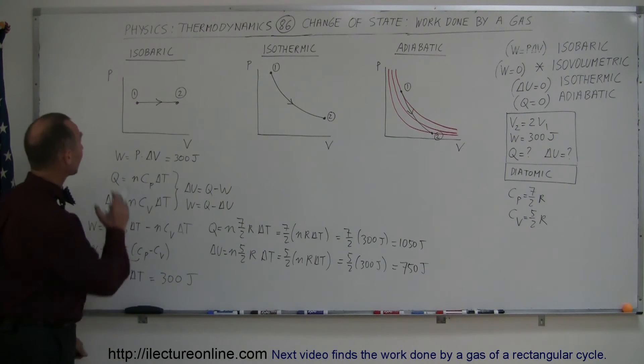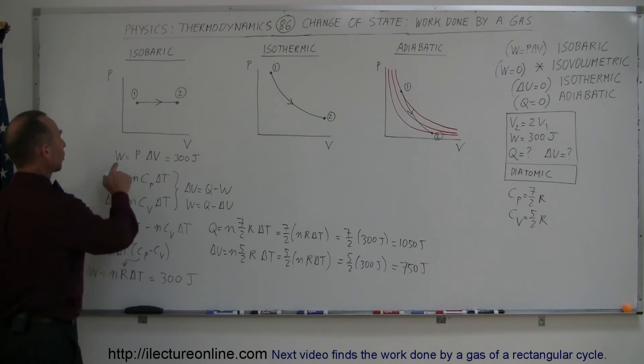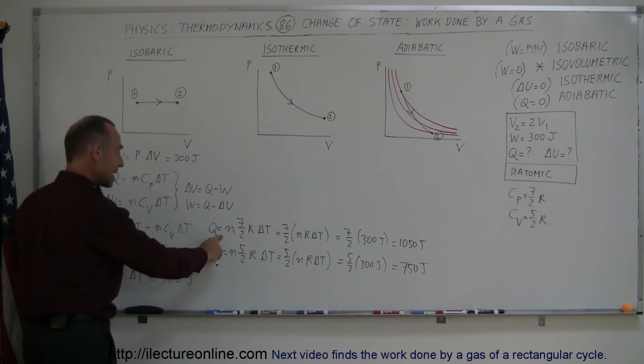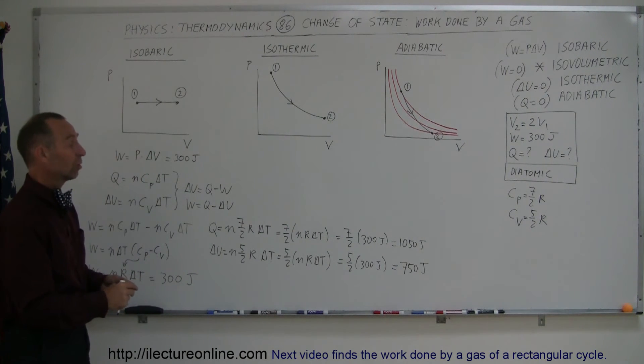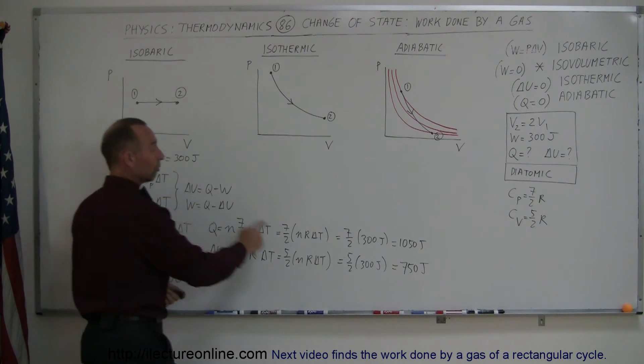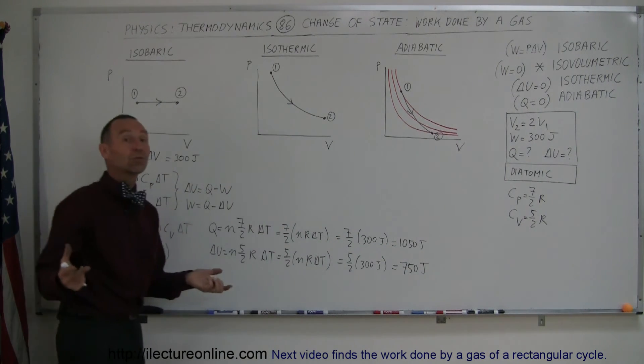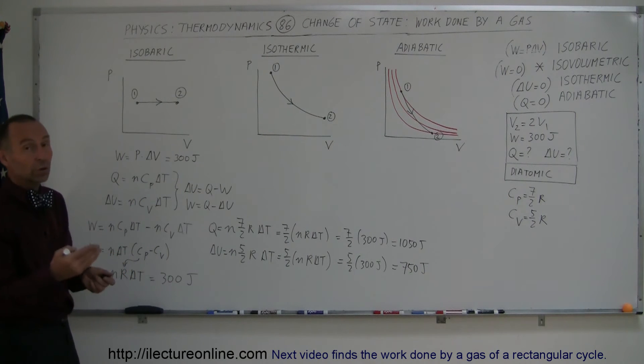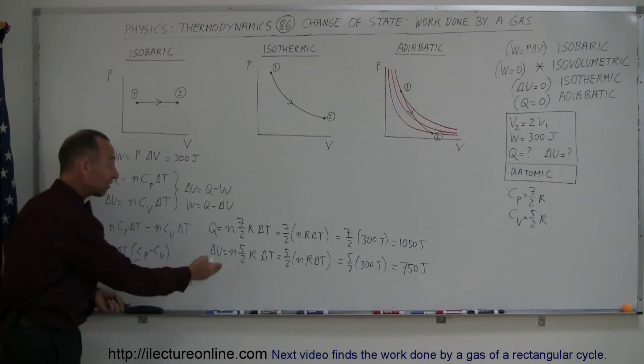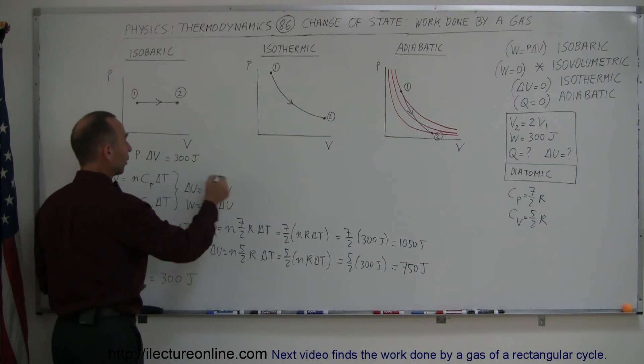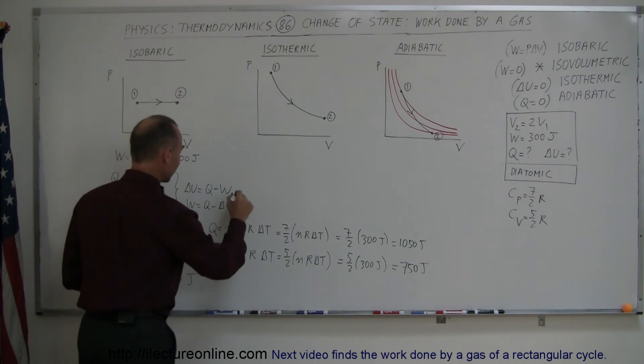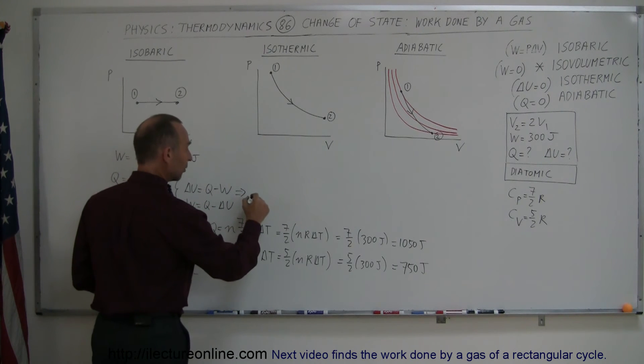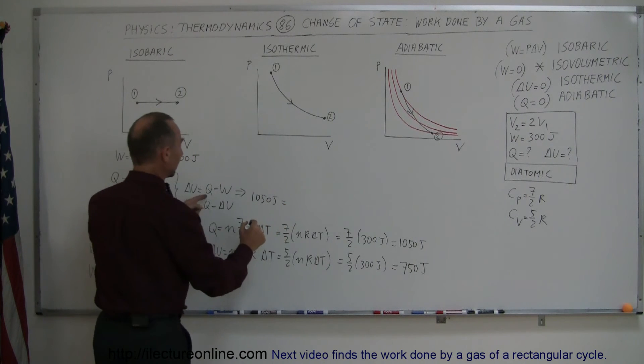So now we can summarize this for the isobaric process. We know that the work done is 300 joules. We know that the heat added to the gas is 1050 joules. So since we then subtract 300 joules from 1050 joules, that means there are 750 joules left over that we didn't use to do work, which means that the internal energy of the gas then will increase. So then going back to our first law of thermodynamics,